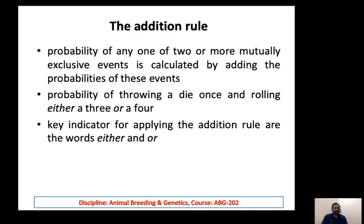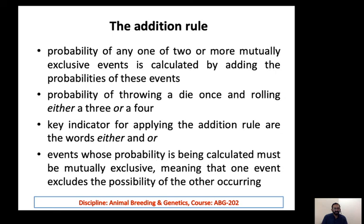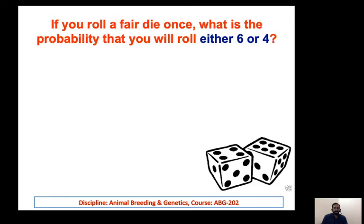The key words to look for are 'either' and 'or.' When those words are used, it means only one of those events is going to occur — making them mutually exclusive. When events are mutually exclusive, we apply the addition rule. The condition is that one event's occurrence excludes the probability of the other occurring.